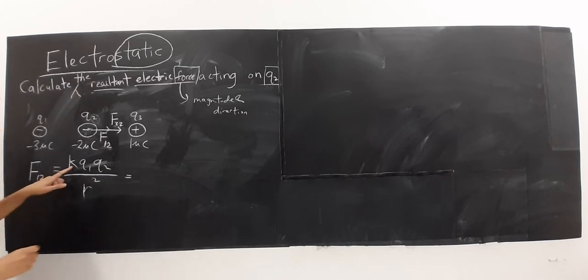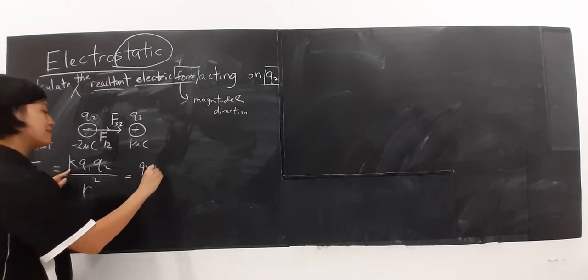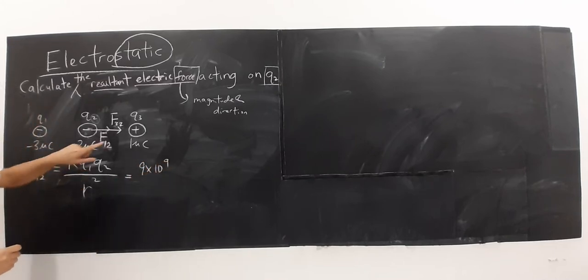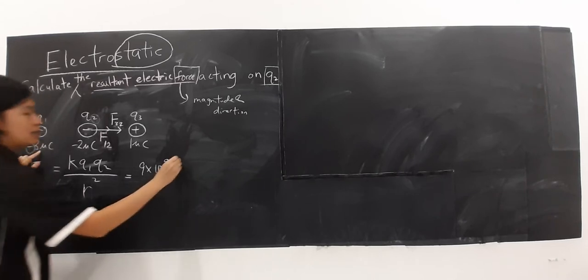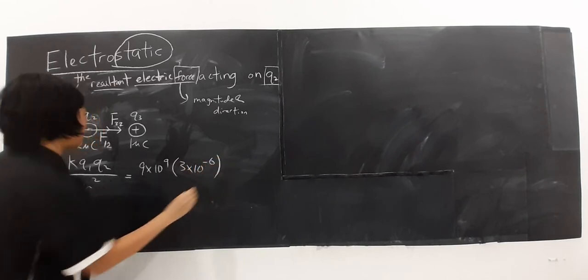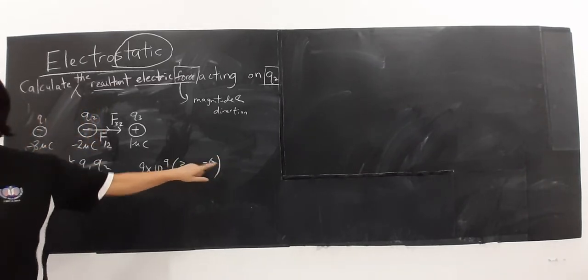Dan seterusnya, K ini macam mana? K is actually 9 exponent 9. Q1, untuk K sini, Q1 nilai dia berapa? Ada negative sign dekat sini. But we never substitute the negative sign. Because we have already determined the direction manually dekat sini. Negative sign kalau you masuk ke dalam, dia akan confuse kan kamu. So, for not confusing, we never substitute the sign here. Remember micro stand for power of negative 6.